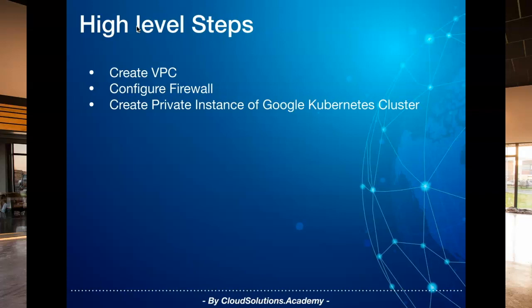Next we go about creating Cloud NAT, which basically allows instances without external IP addresses and private Google Kubernetes Engine clusters to connect to the internet. As part of the NAT configuration we would configure a few static IPs that you can provide to external services for their IP whitelisting requirements.